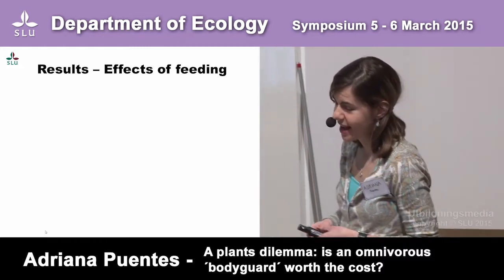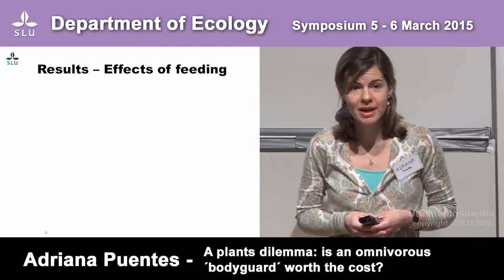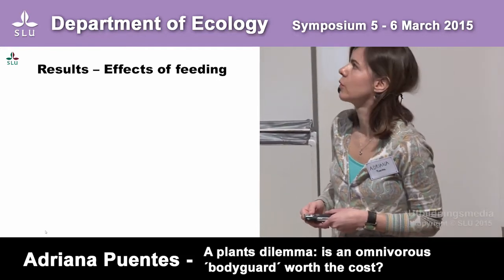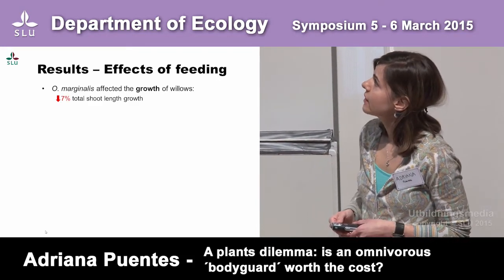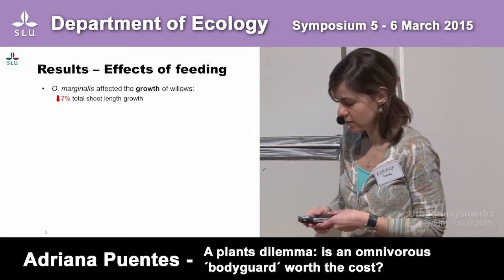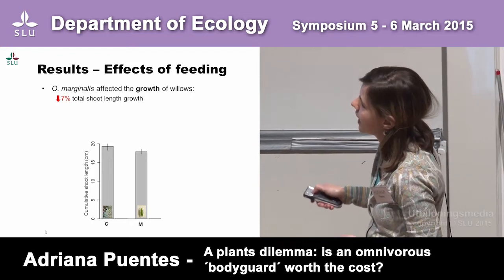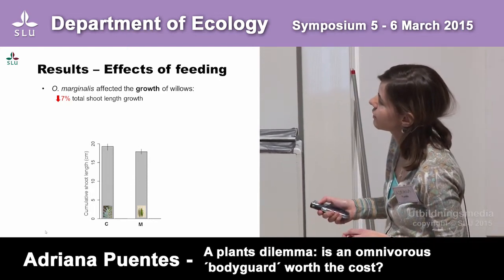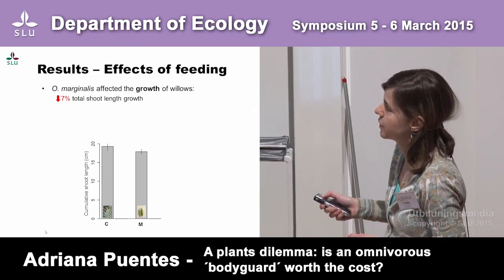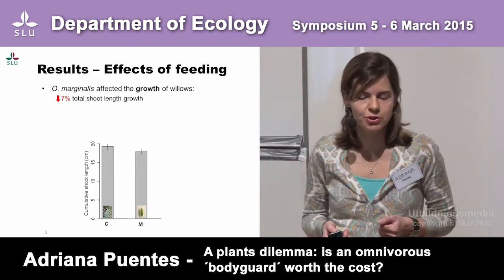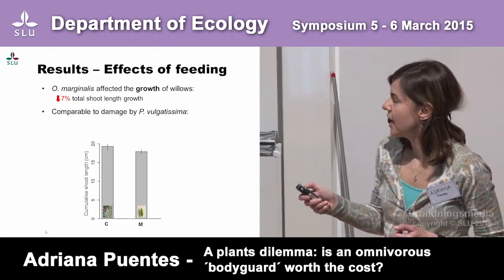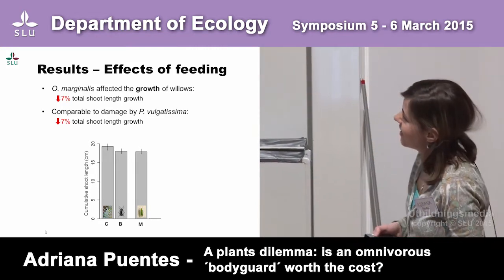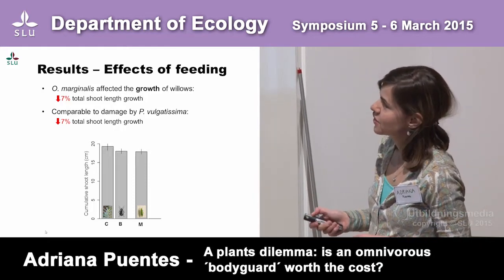So what did I find? To my surprise, feeding by the myrid — which was considered negligible or minor — actually did affect the growth of the willows. It reduced total growth by 7%, shown here as cumulative shoot length on the y-axis over the entire experimental period. Even more astonishing was that when I looked at the effects of the beetles only, that was identical. The myrids are reducing growth just as much as the leaf beetles.